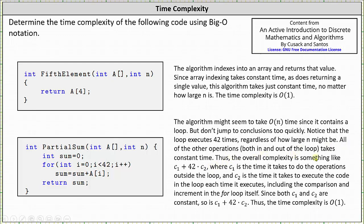All of the other operations both in and outside the loop take constant time. Thus the overall complexity is something like c sub one plus 42 times c sub two, where c sub one is the time it takes to do the operations outside the loop, and c sub two is the time it takes to execute the code in the loop each time it executes, including the comparison and increment in the for loop itself. Since c sub one and c sub two are constants, so is c sub one plus 42 times c sub two. Thus the time complexity is big O of one, not big O of n.